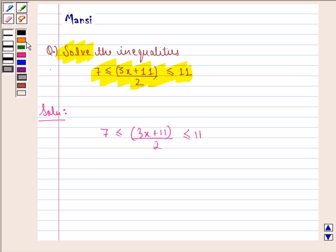Now this statement is equivalent to two inequalities. First is 7 ≤ (3x + 11)/2. This we get from the first part.